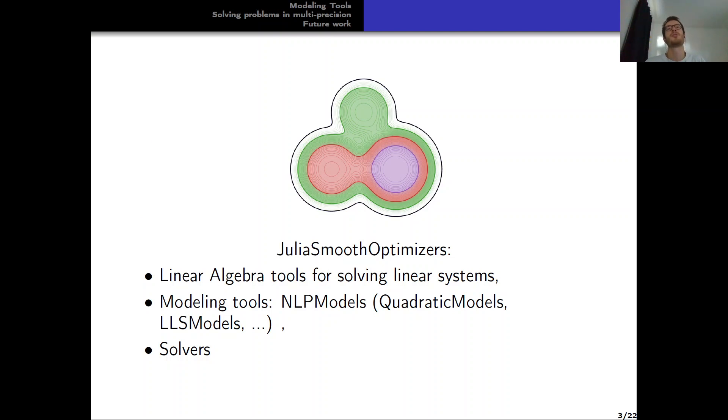A quick presentation of Julia Smooth Optimizers. JuliaSmoothOptimizers is an organization that provides different tools. There are some linear algebra tools for solving linear systems, for example. Some modeling tools with NLP models, and some more specific models such as quadratic models and LLS models that I will present later in this talk. And finally, some solvers. Some solvers are written in Julia and some are interfaces to solvers written in other languages.